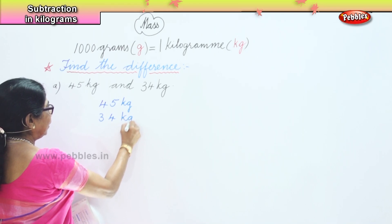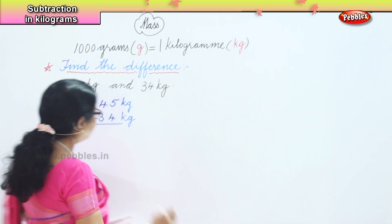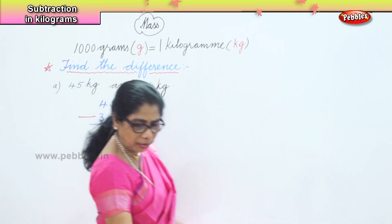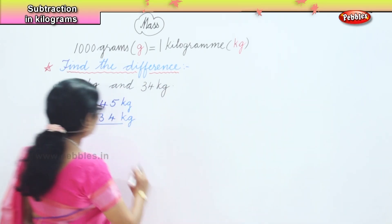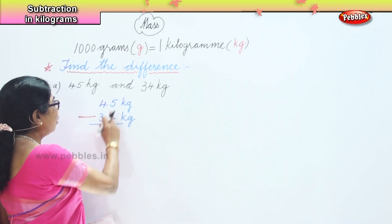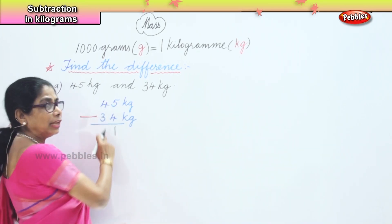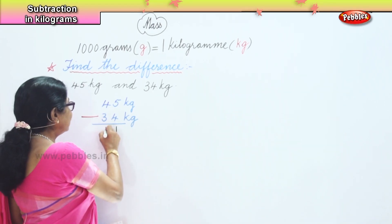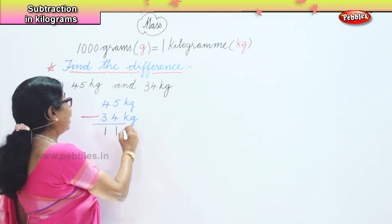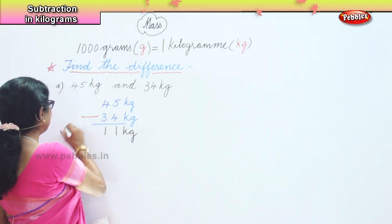Finding the difference means minus — you must put the minus sign to help yourself. Look at the two numbers: 5 on top, 4 on the bottom. 5 take away 4 is 1, 4 take away 3 is 1. So 45 kilogram take away 34 kilogram is 11 kilograms — that's our answer.